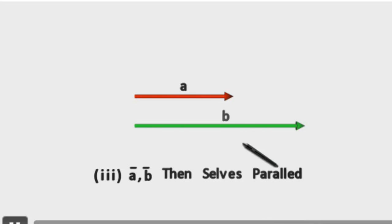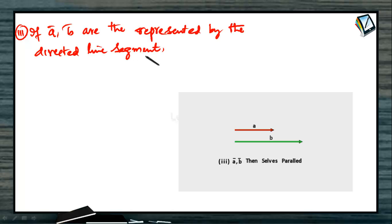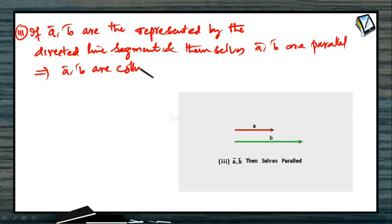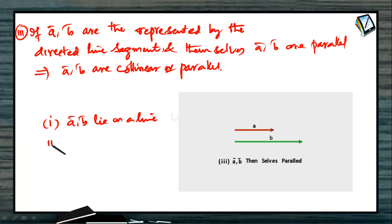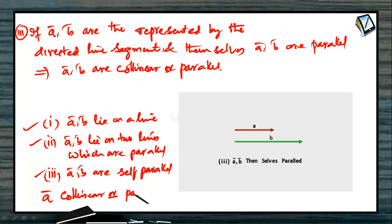The third case: observe this animation — if a-bar and b-bar are represented by directed line segments and they themselves are parallel, then we say a-bar and b-bar are collinear or parallel vectors. In summary: case one — a-bar and b-bar lie on the same line; case two — they lie on two parallel lines; case three — they are themselves parallel. In all three cases, a-bar and b-bar are called collinear or parallel vectors.